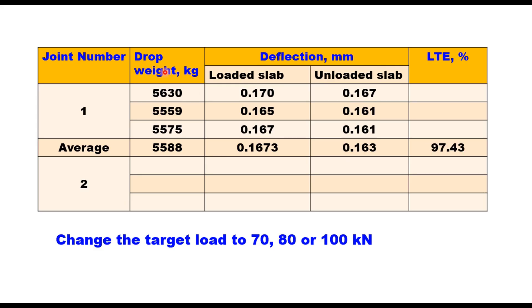Similarly, you can change the drop weight to 70 kN, 80 kN or 100 kN and determine the load transfer efficiency. And as I told you, if it is less than 0.5 or 0.4, that means your joints need immediate attention. So that is how you determine the load transfer efficiency using FWD.